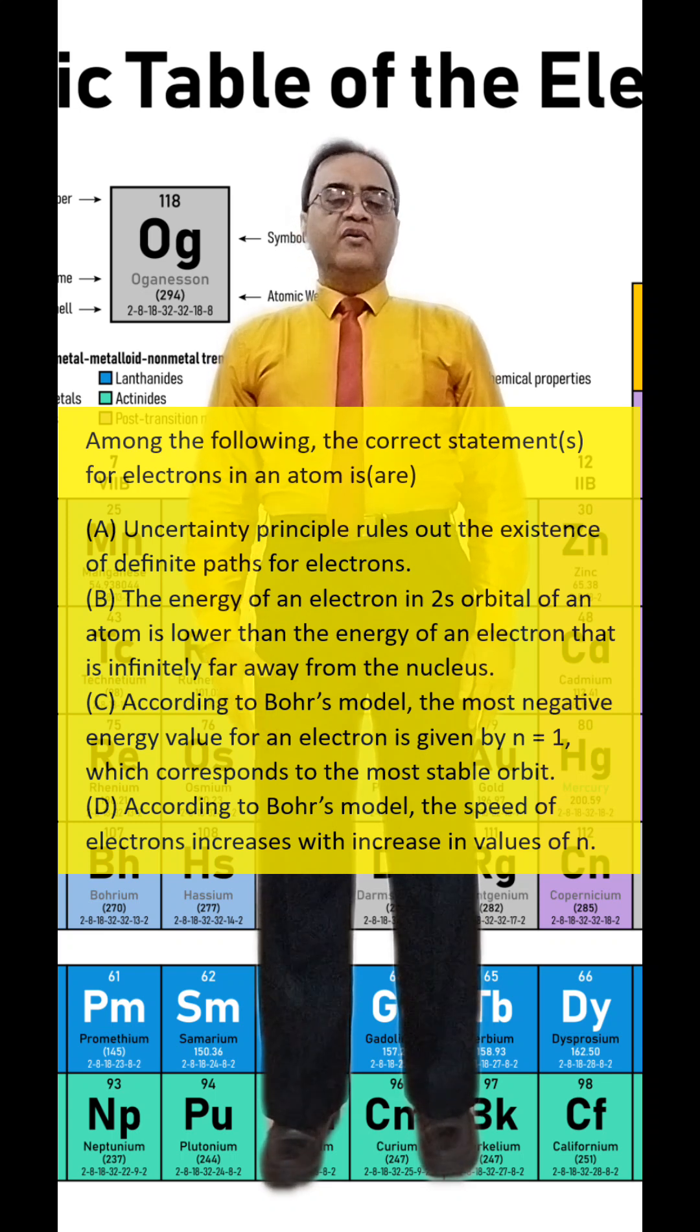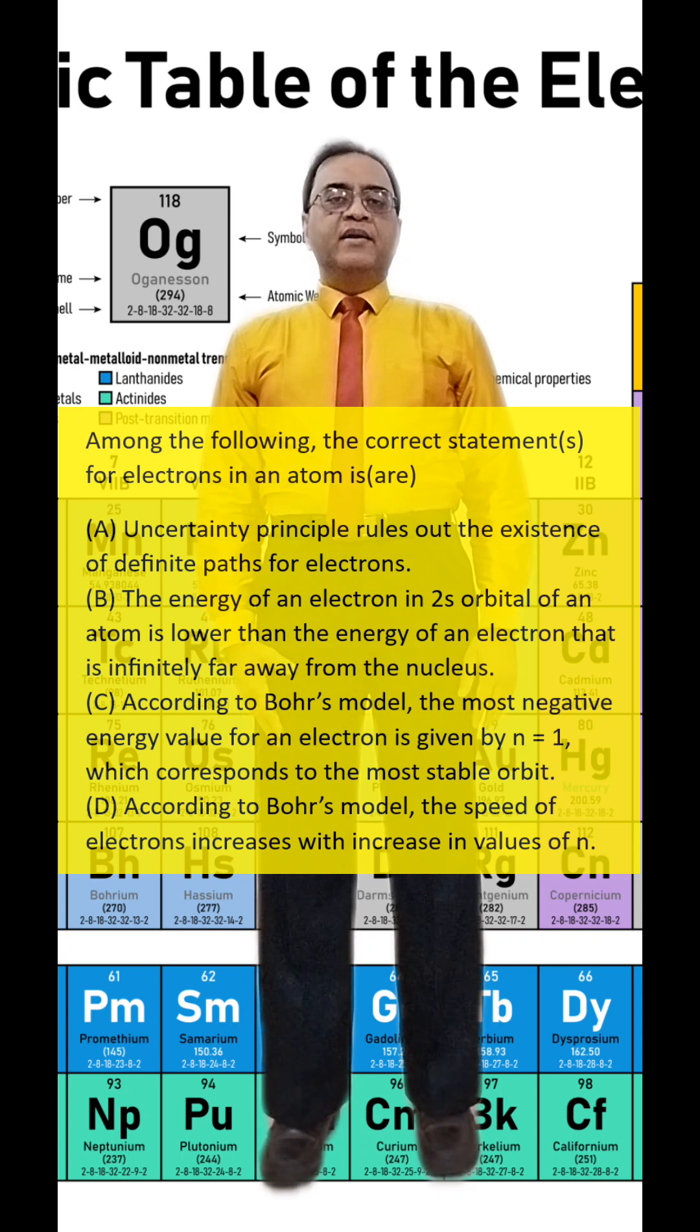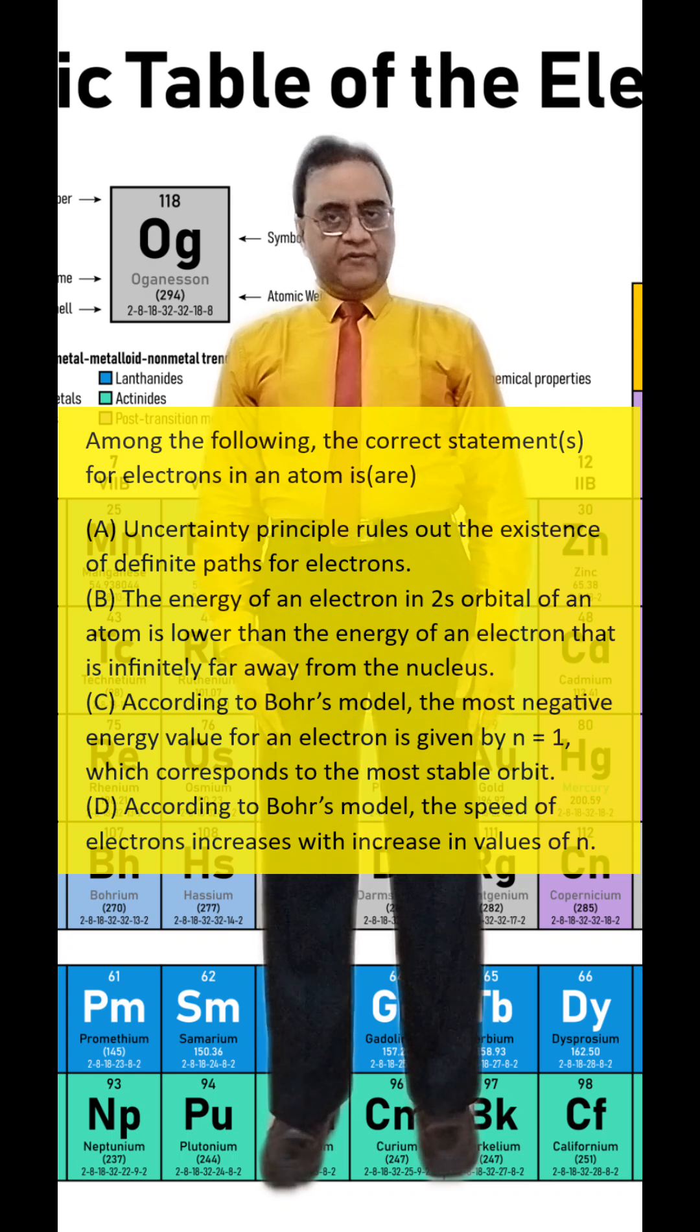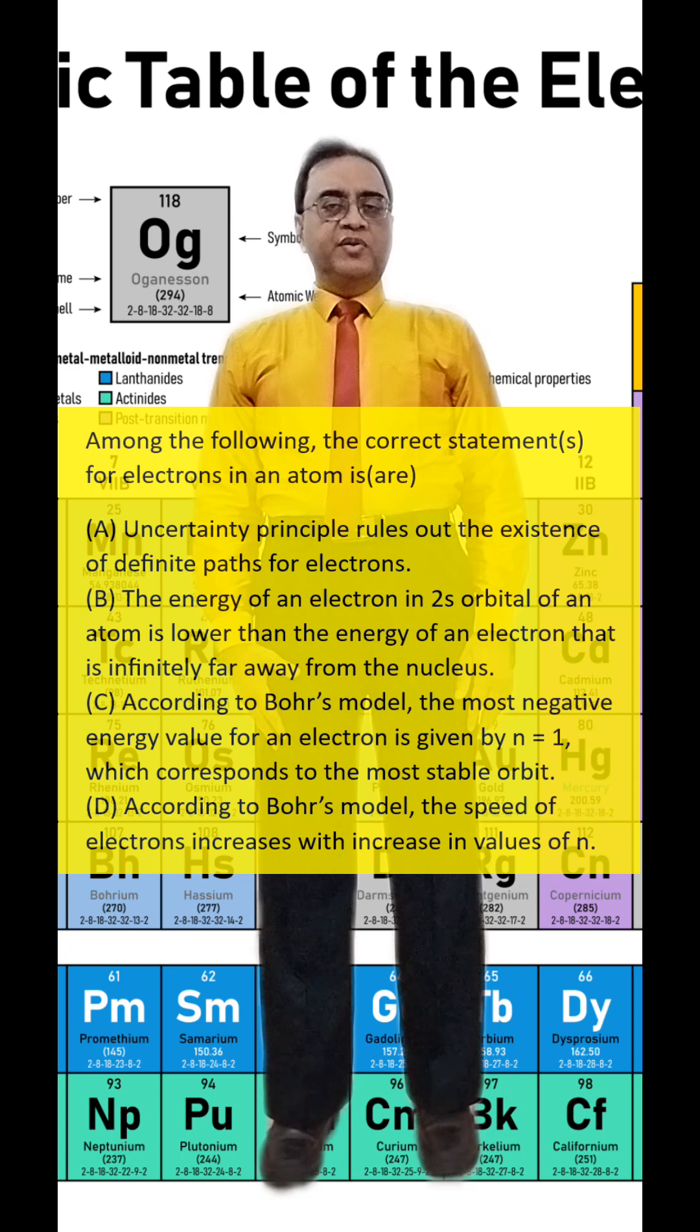So when we go closer and closer, the energy is more and more negative. So at n equal to 1, the energy is most negative. That is the situation of most stable. n equal to 1.